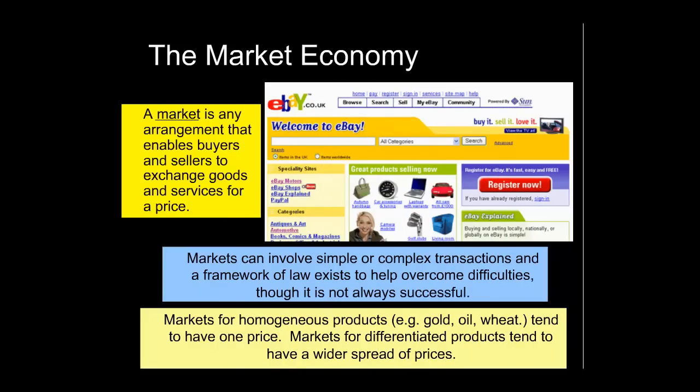So what exactly is the market economy? Well, it's made up of two component parts. On the one hand there are consumers, and on the other hand there are sellers. A market is really any arrangement that enables buyers and sellers to exchange goods and services for a price.